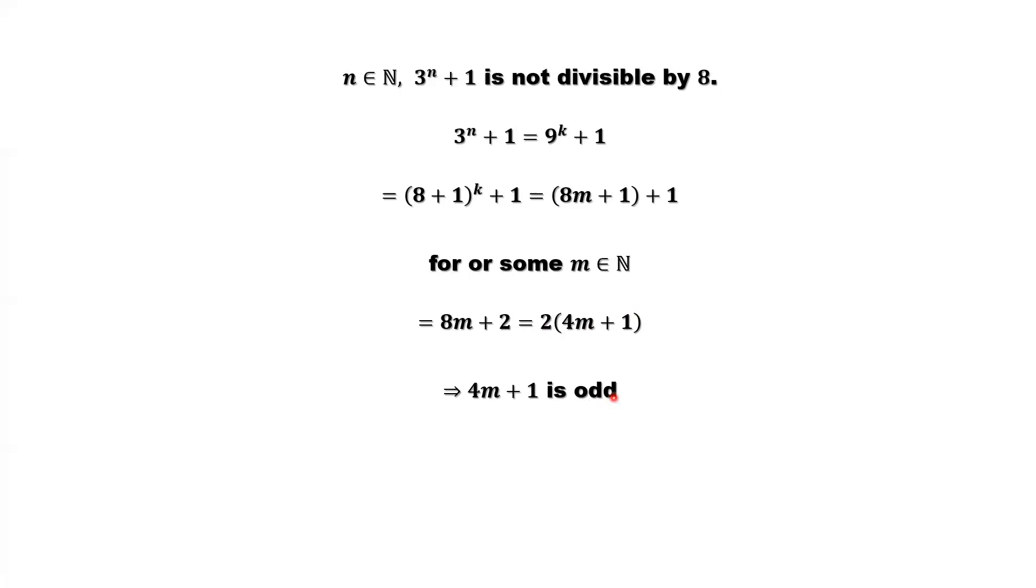Odd number does not have a 2 as a factor overall. 3 to the power of n, when n is an even number, is not divisible by 8.